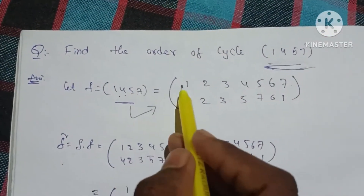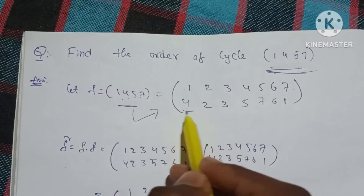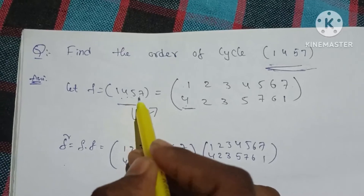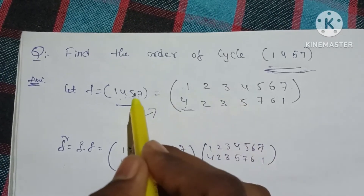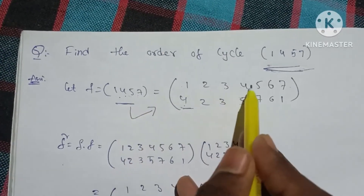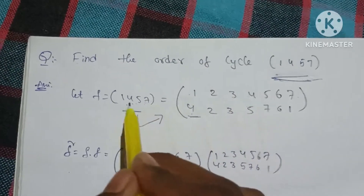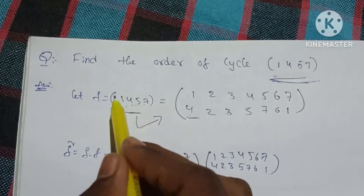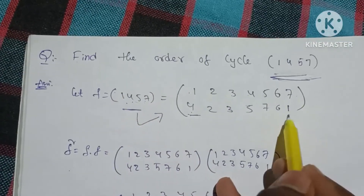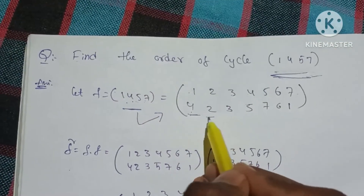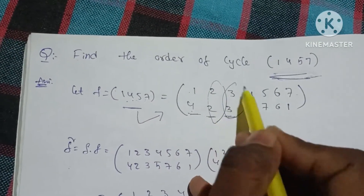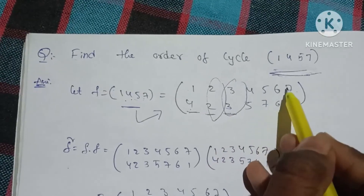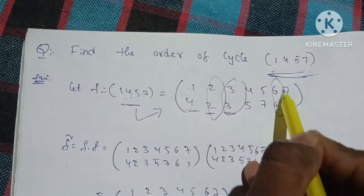So we trace the cycle: 1 maps to 4, 4 maps to 5, 5 maps to 7, 7 maps to 1. The remaining elements are the same: 2→2, 3→3, 6→6.